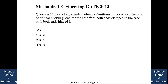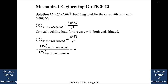For a long slender column of uniform cross-section, the ratio of critical buckling load with both ends clamped to both ends hinged is found. Critical buckling load for both ends clamped is 4π²EI/L², and for both ends hinged it is π²EI/L². The ratio is therefore 4.